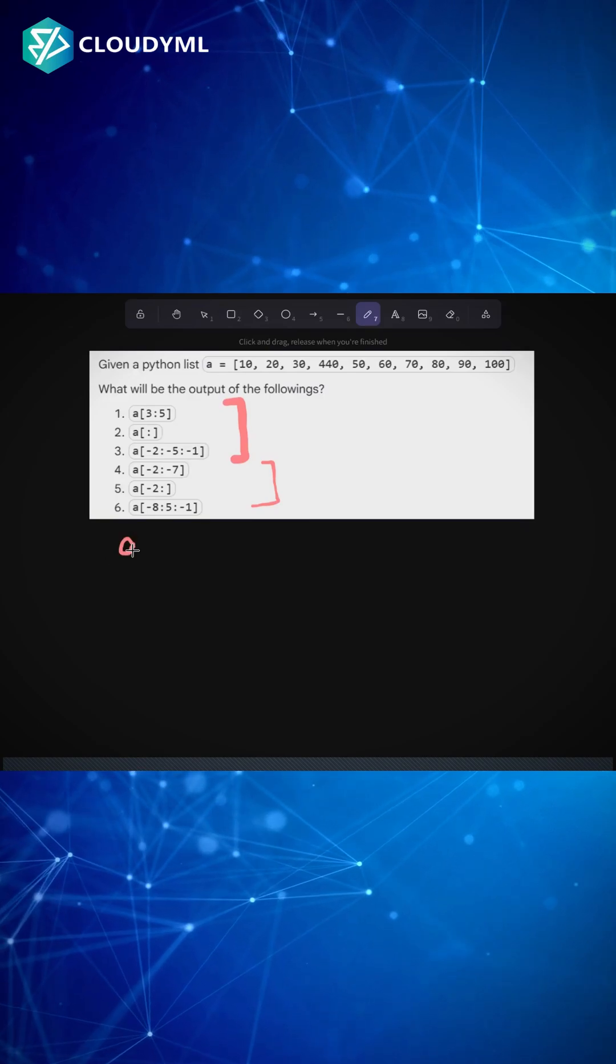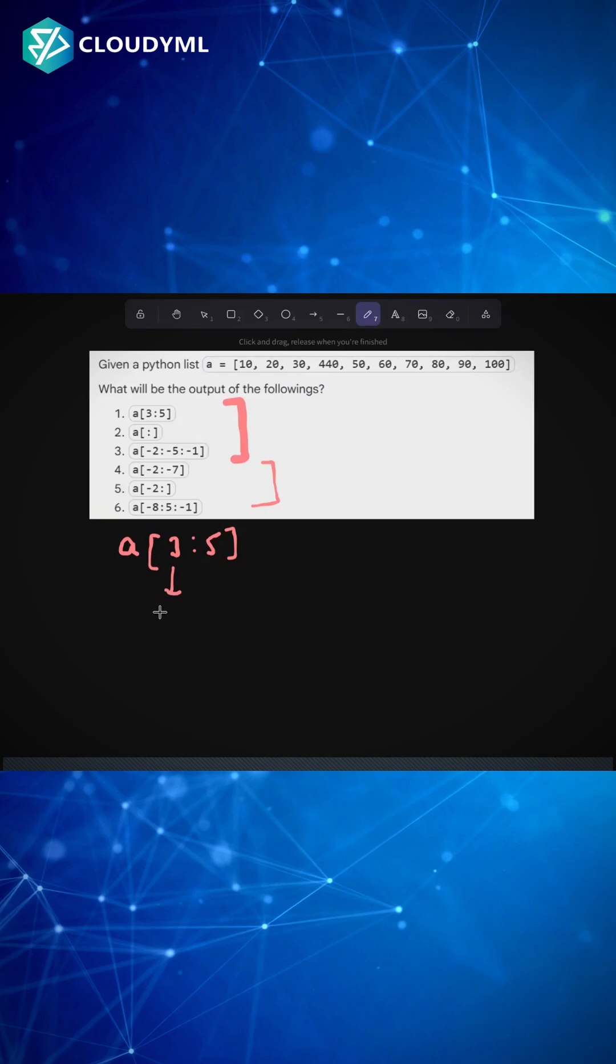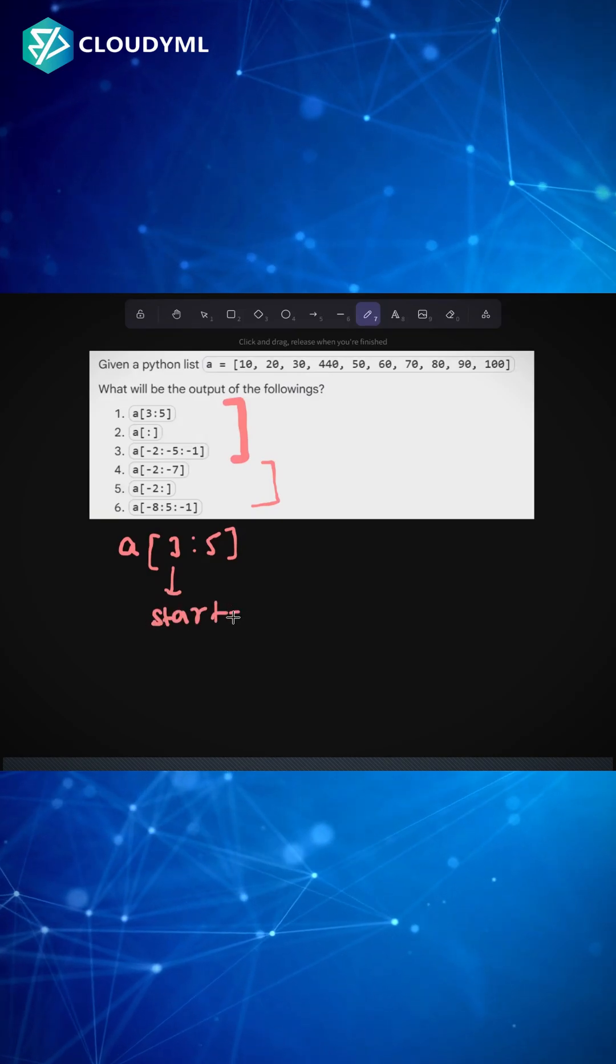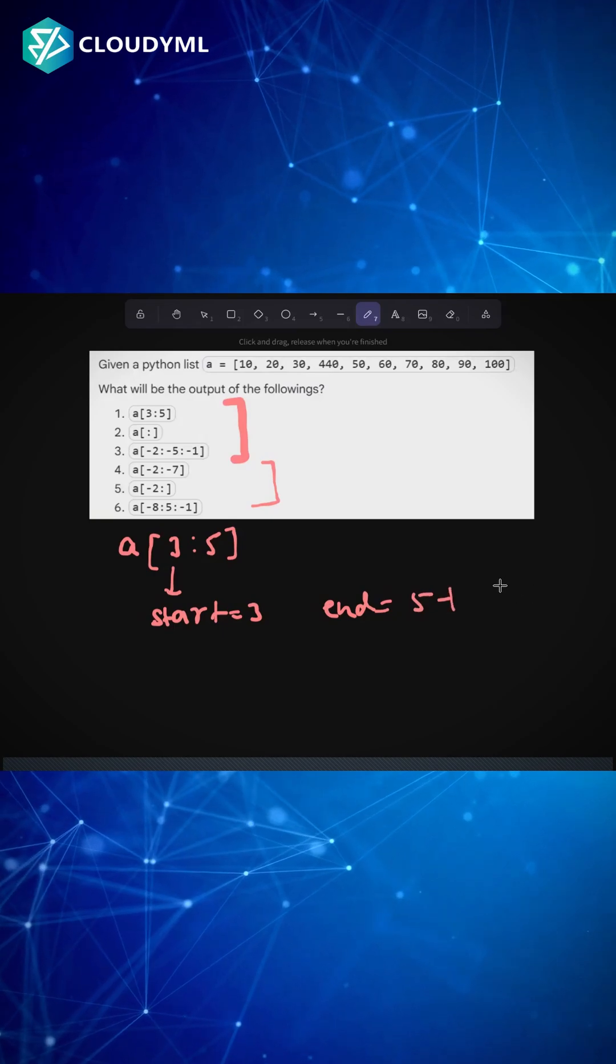First question is a[3:5]. What does that mean? First is my start index, so my start index is 3. My end index is 5 minus 1, and by default the step is 1.